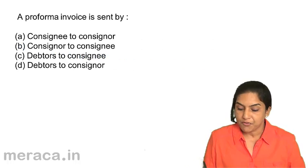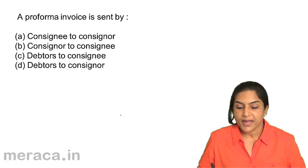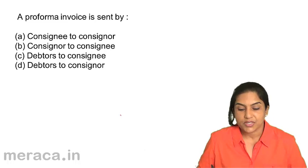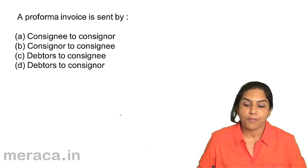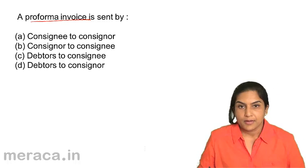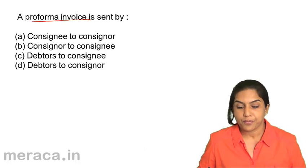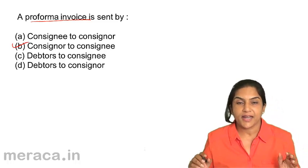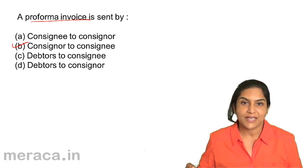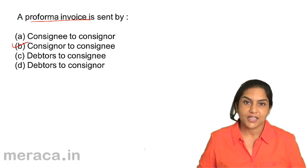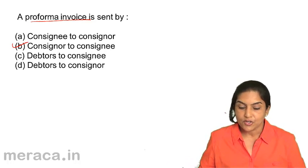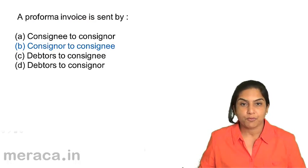A pro forma invoice is sent by: A. Consignee to consigner, B. Consigner to consignee, C. Debtors to consignee, D. Debtors to consigner. A pro forma invoice is sent by the consigner to the consignee — it gives details and the cost of the goods being sent so that the consignee can sell goods on behalf of the consigner. Correct answer: B, consigner to consignee.